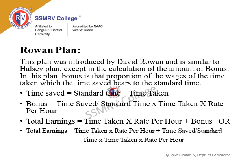Rowan's Plan was introduced by David Rowan and is similar to Halsey's Plan except in the calculation of the bonus. In Rowan's Plan, the bonus is that proportion of the wages for time taken as the time saved bears to the standard time. Formulae: Time saved = Standard time − Time taken; Bonus = (Time saved ÷ Standard time) × Time taken × Rate per hour; Total earnings = (Time taken × Rate per hour) + Bonus.